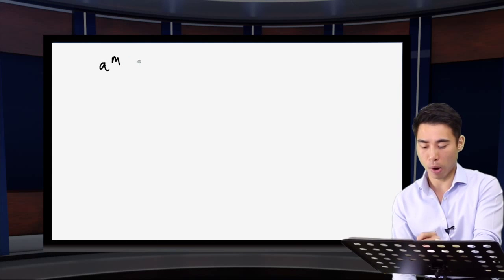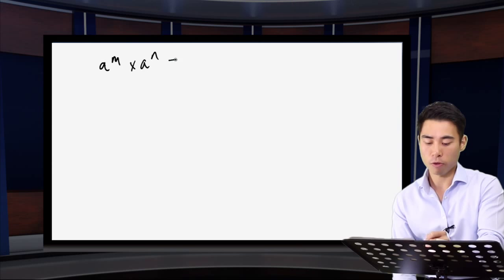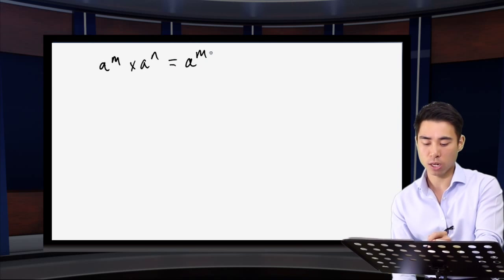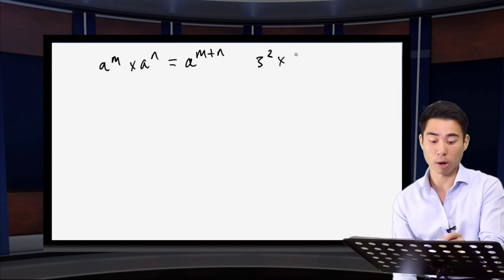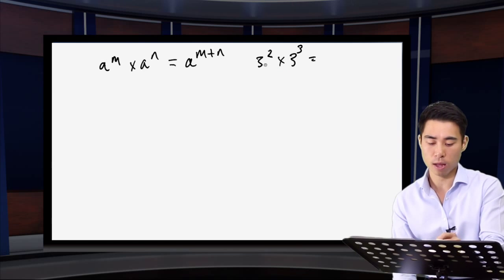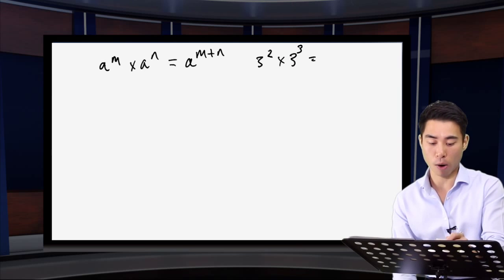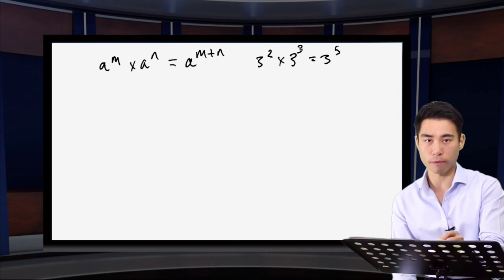First, the multiplication law. If I have A to the power M, and the same number raised to another power, and I'm multiplying those two together, I simply add my powers. So if I have three to the power two, multiplied by three to the power three — notice I've got the same base — I add the powers: two plus three gives me a single power of five.